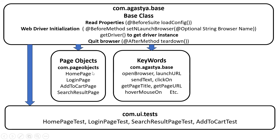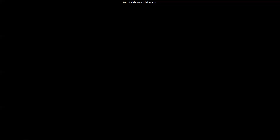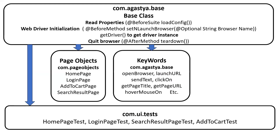I have created a com.pageobject package in which I have written page objects, or page classes. I have written four classes: home page, login page, add to cart page, and search result page. Using this keyword class and page objects, with the base class as the foundation, I have written home page test, login page test, add to cart page test, and search result page test in the com.ui.test package.